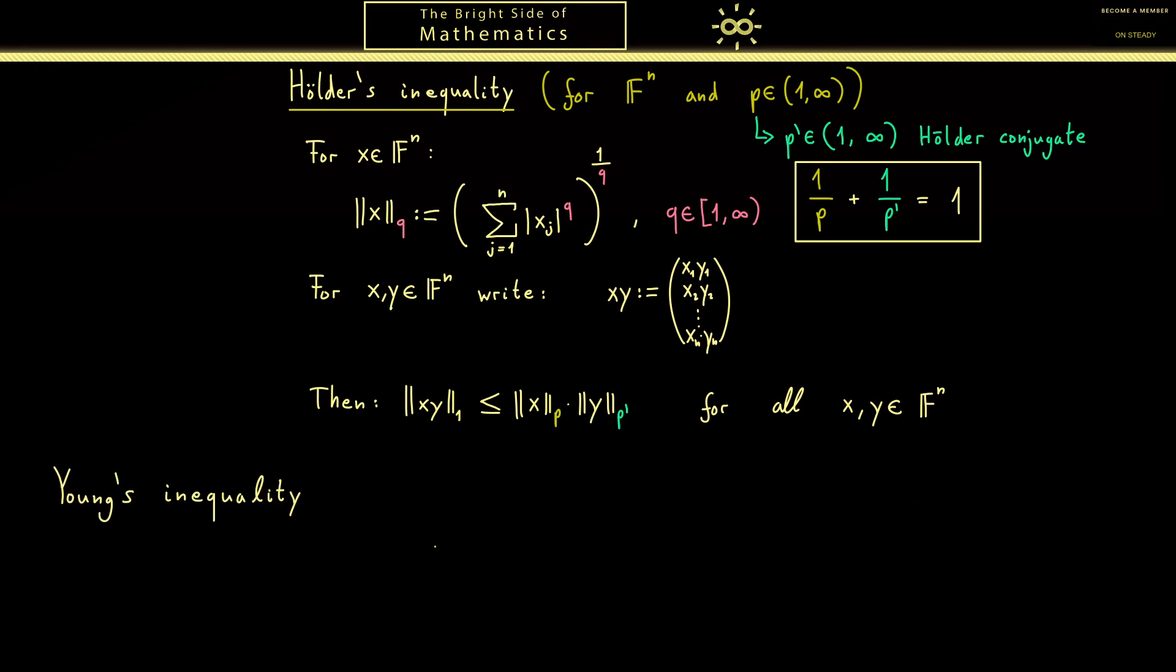In order to prove Hölder's inequality, we first need another inequality which is known as Young's inequality. In fact, this one is very simple. We just look at positive numbers a, b, and then we conclude that the product ab is always less or equal than the following sum.